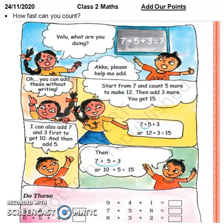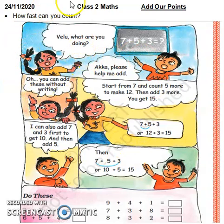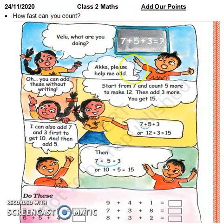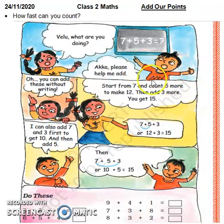Okay dear children, so today we will continue with this activity from our chapter. How fast can you count? This is a girl, and this is a girl whose name is Velo. They are both brothers and sisters. This girl asks Velo: what are you doing? This child asks you — please help me add.